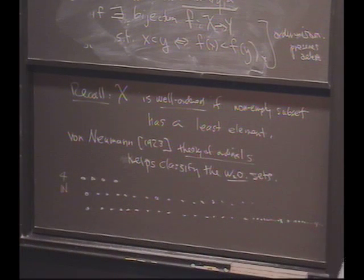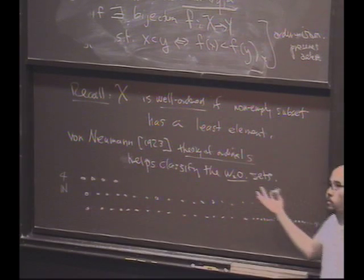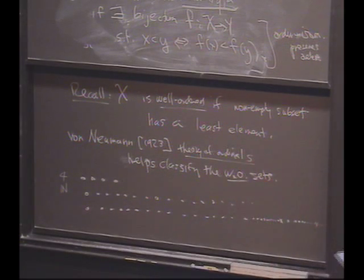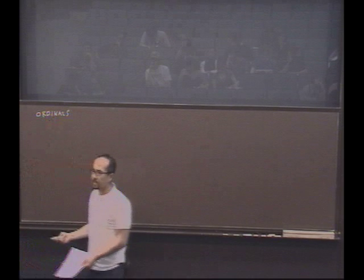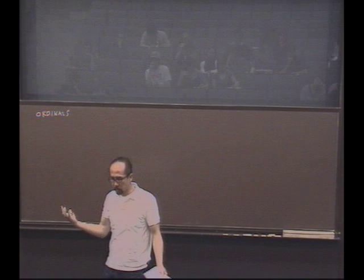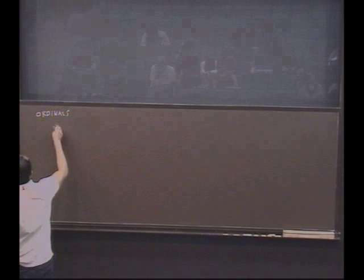So what was von Neumann's idea? Von Neumann said, here's one way we could start off. Let's start off by describing a set that we'll think of as a well-ordered set, a set that's naturally vacuously well-ordered: the empty set.